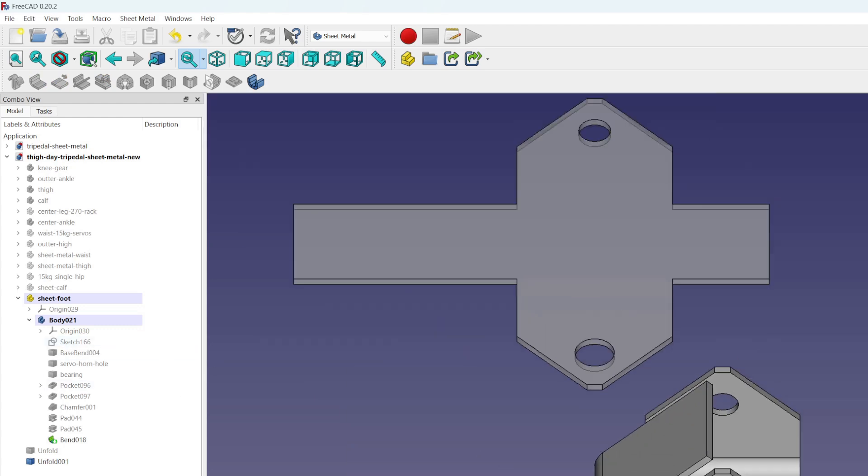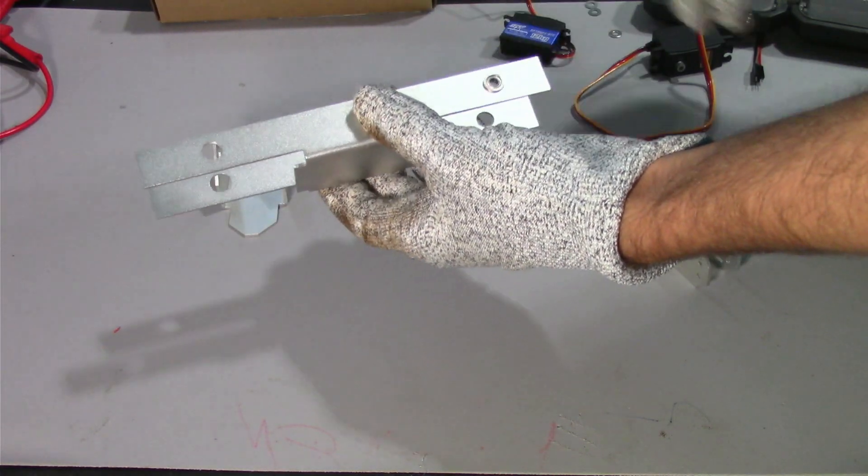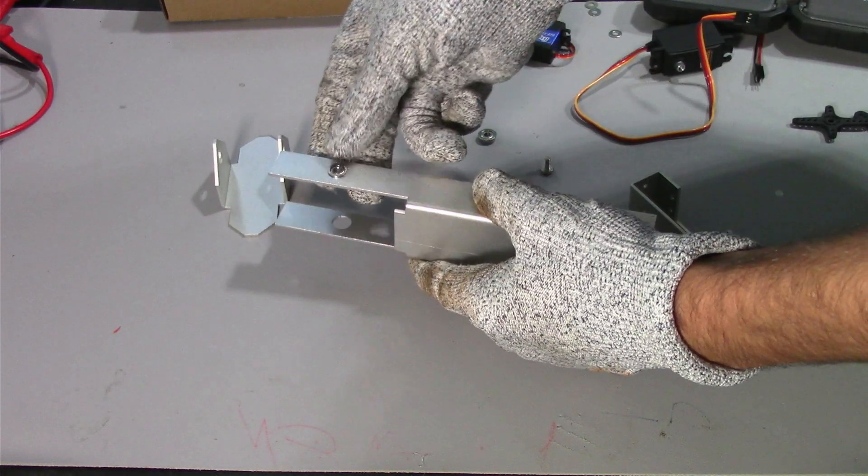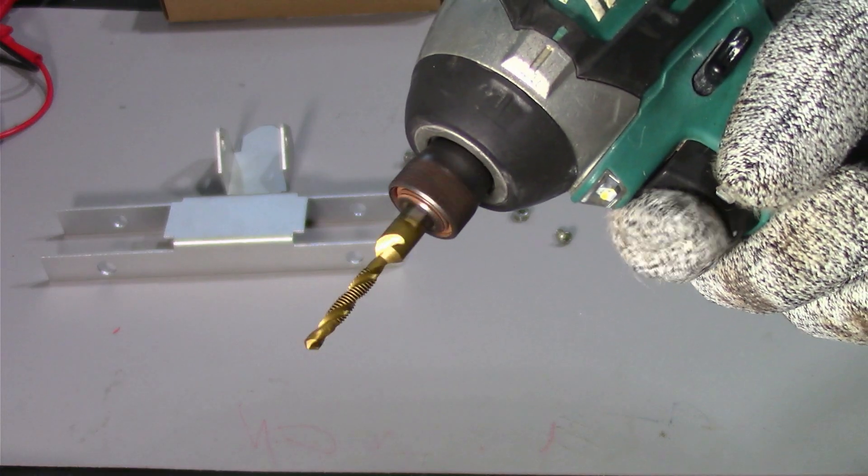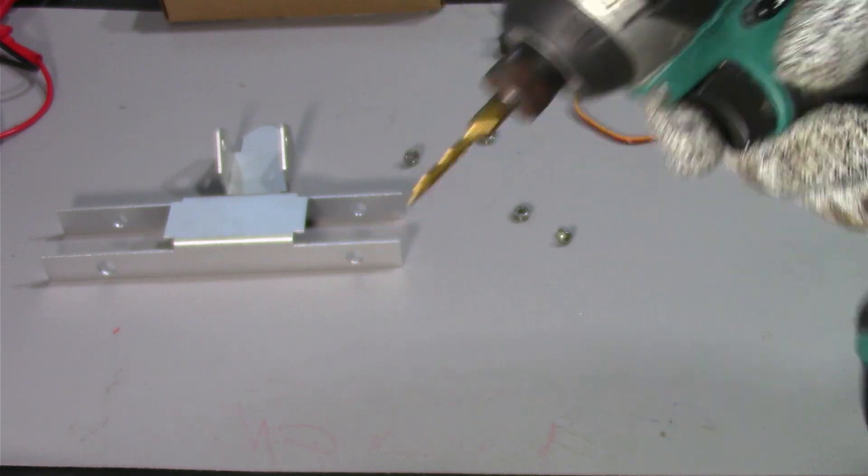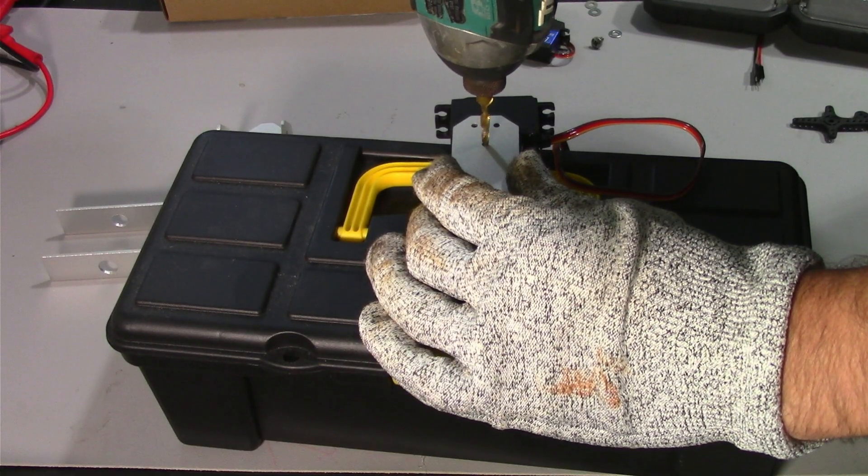Every joint on the leg will get a phalange bearing. I didn't order the holes threaded, so I'll have to tap them using an M4 thread. Normally you'd want to use a drill press.